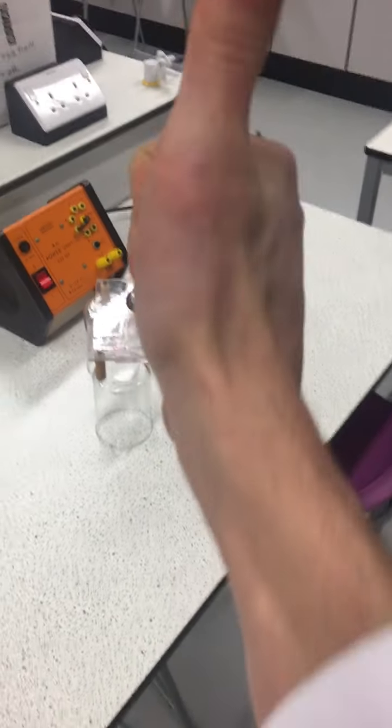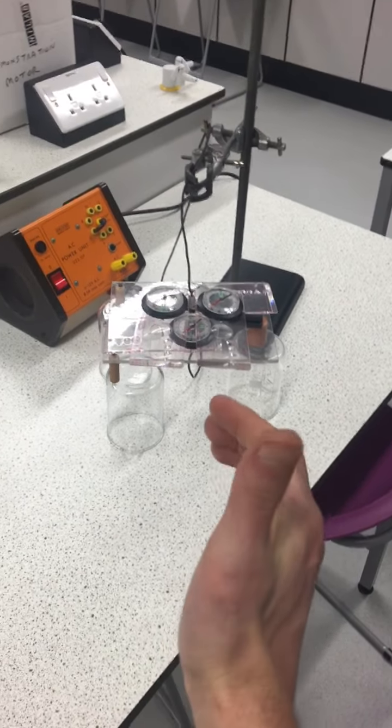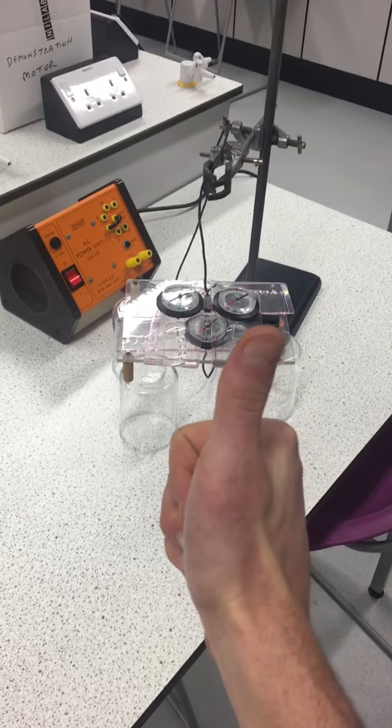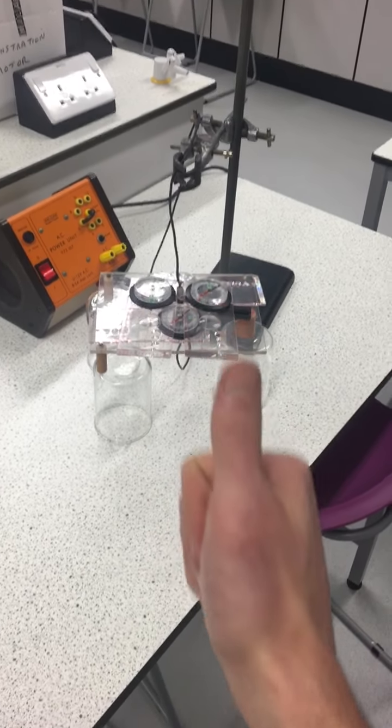And that, Year 11, demonstrates to you the right hand rule showing current and the magnetic field that is created that wraps around the wire in the direction of the current.